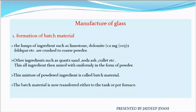Now let's look at the detail step by step. The first step is the formation of batch material — the raw material is uniformly mixed in powder form. Here, lumps of ingredients such as limestone, dolomite, and feldspar — like limestone and calcium carbonate — are crushed to coarse powder.